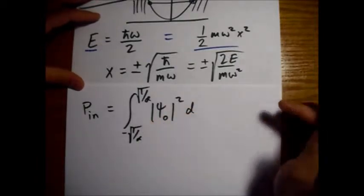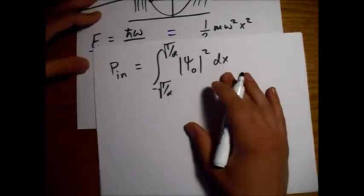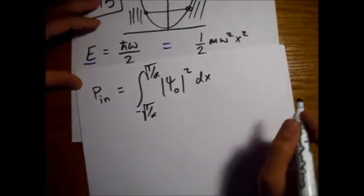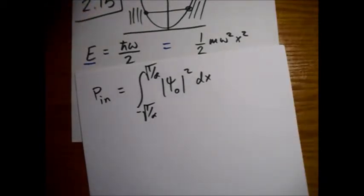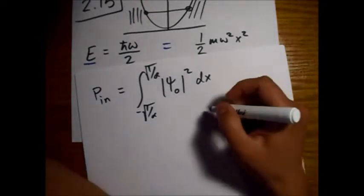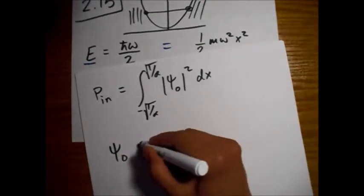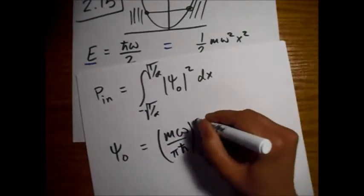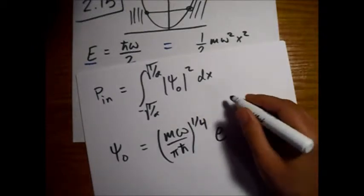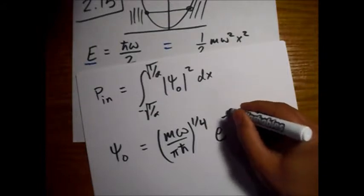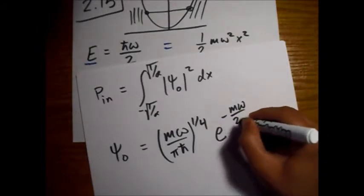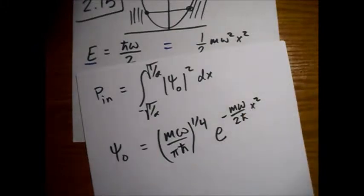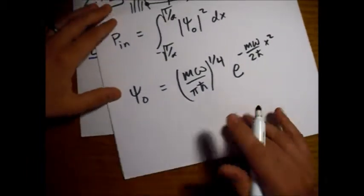The state is real, so we just square it directly. For stationary states, we integrate with respect to x. The ground state is given in equation 2.59, which is (mω/πℏ)^(1/4) times e^(−mω/2ℏ · x²).